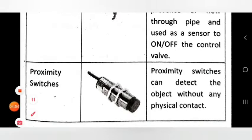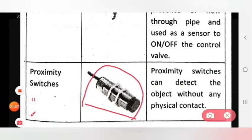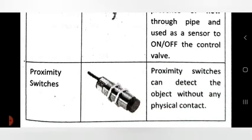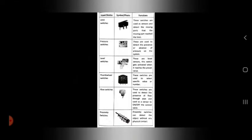The next input device is the proximity switch. Here is a photo of the proximity switch. The function of proximity switches is that they can detect an object without any physical contact. So these are the input devices in PLC.